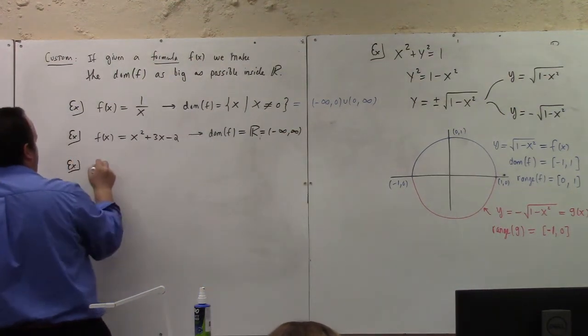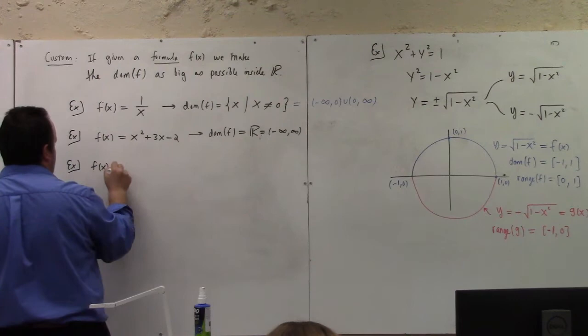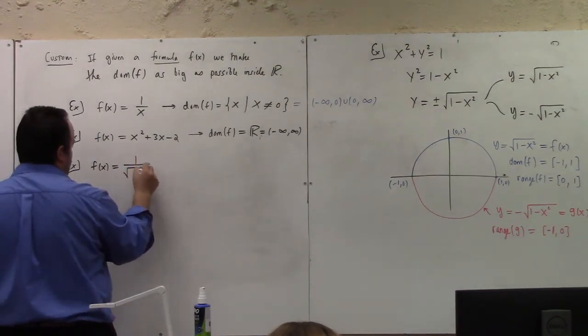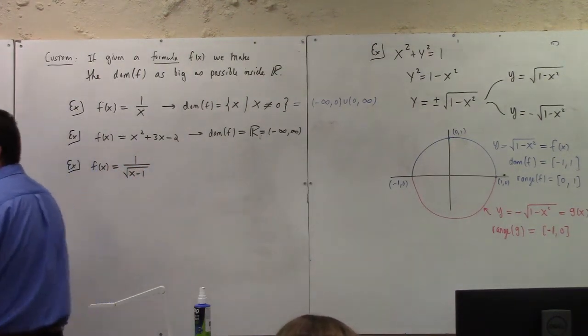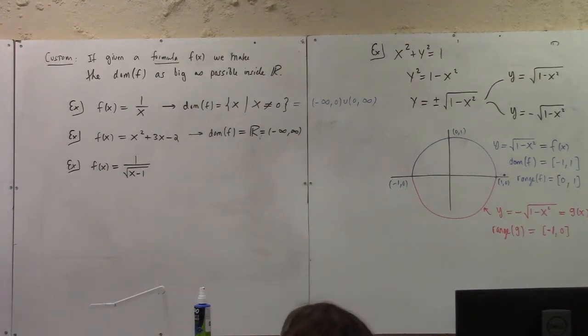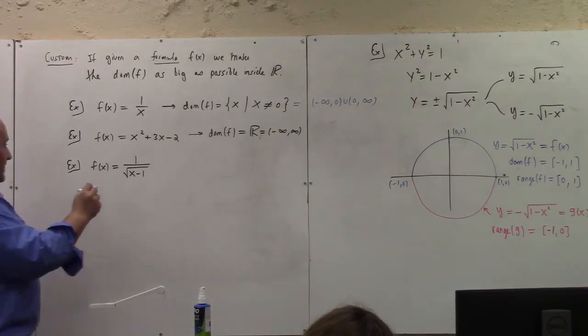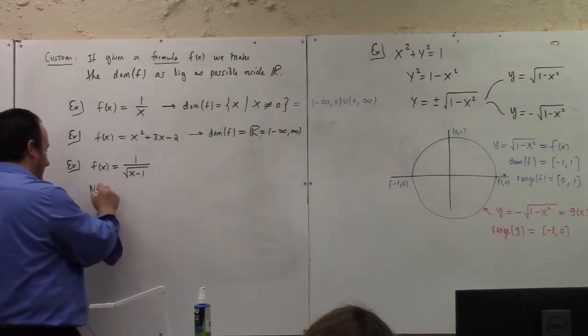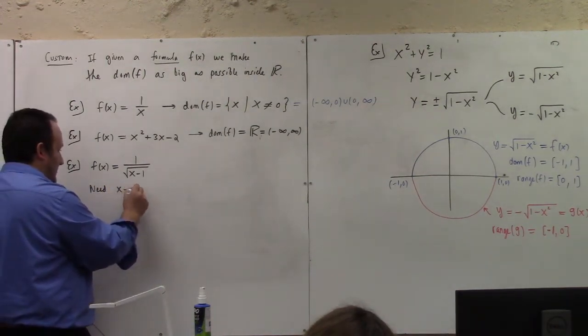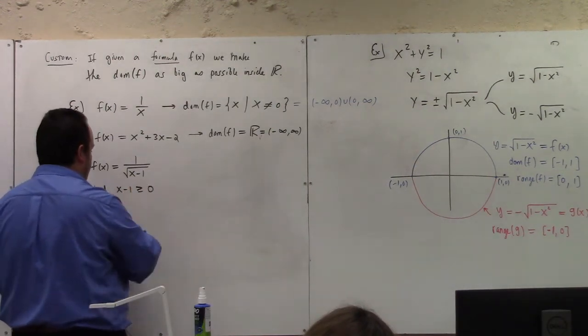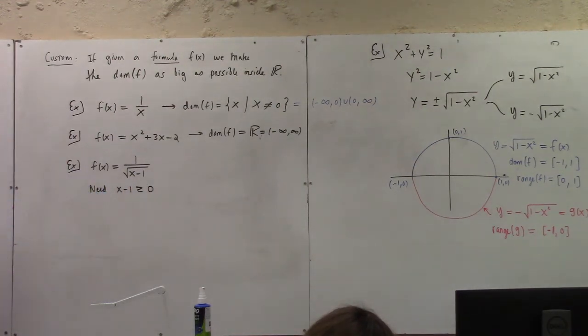Right. Another example, we could have f of x equals 1 over the square root of x minus 1. What do we need in order for the square root of x minus 1 to be real? We need x minus 1 to be greater than or equal to 0 for the square root to make sense, right? Can we allow equals to 0 there, though?